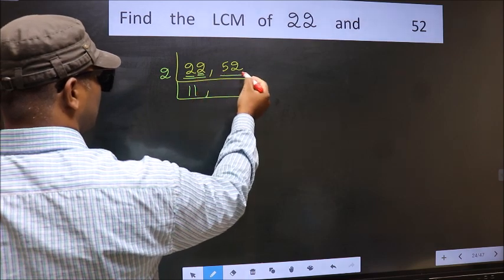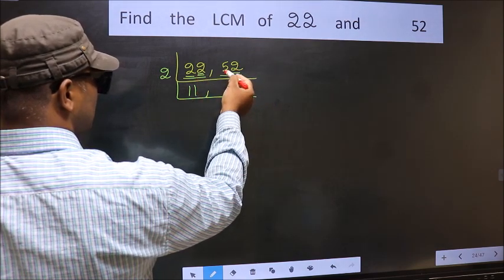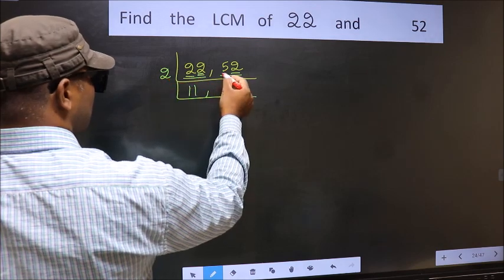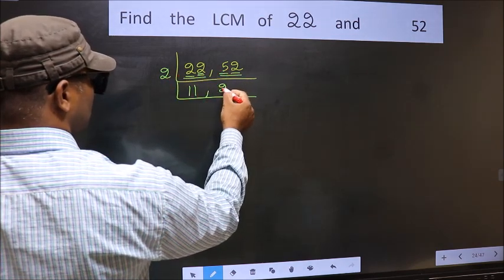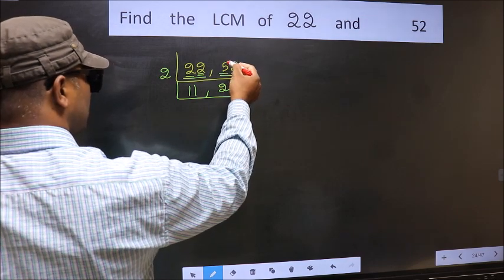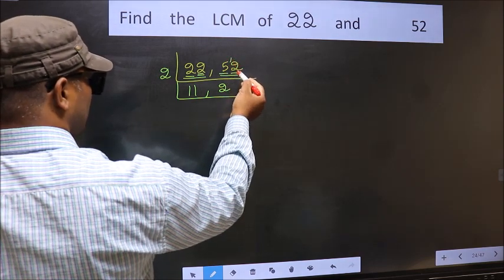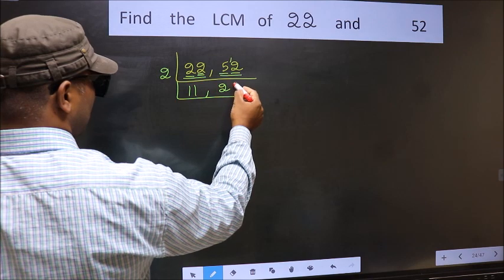Now the other number 52, last digit is 2, so this is divisible by 2. First number is 5, a number close to 5 in the 2 table is 2 times 2 equals 4. 5 minus 4 is 1, carried forward gives 12. When do we get 12 in the 2 table? 2 times 6 is 12.